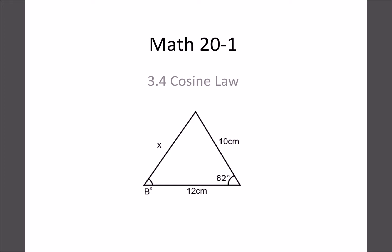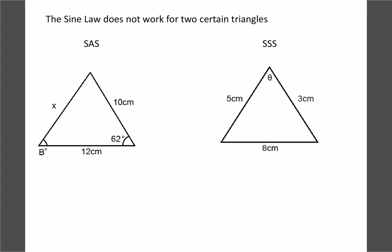Our last topic for the regular trig unit is the cosine law. We'll be looking at triangles again. We went through the sine law and the ambiguous case, but there's another scenario that causes problems. If we look at this example and try to find side x using the sine law, we'd have x over sine 62, but we don't know the other angles, so sine law doesn't work. We'll actually solve this one in a few minutes.